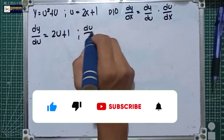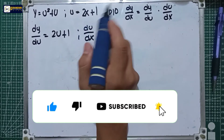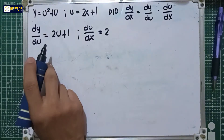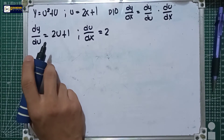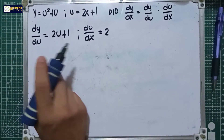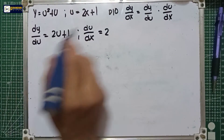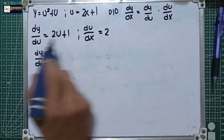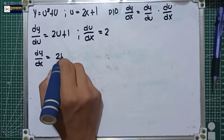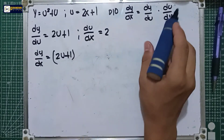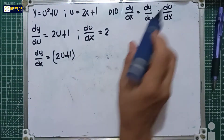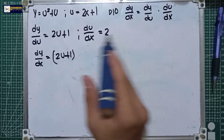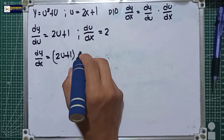For the u equation, du over dx equals the derivative of 2x plus 1. The derivative of 2x is 2, and the derivative of 1 is 0. So du over dx equals 2. Now applying the chain rule formula: dy over dx equals dy over du, which is 2u plus 1, multiplied by du over dx, which is 2.